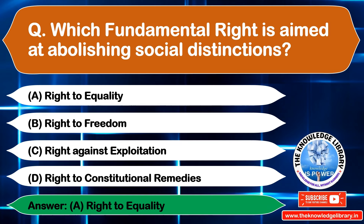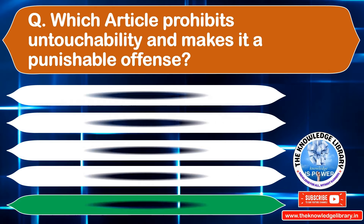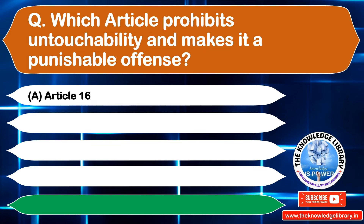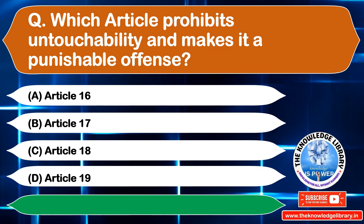The next question is: which article prohibits untouchability and makes it a punishable offence? Option A: Article 16, Option B: Article 17, Option C: Article 18, Option D: Article 19. The correct answer is Option B: Article 17.